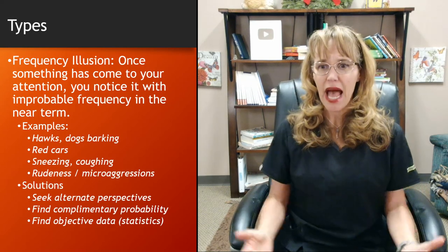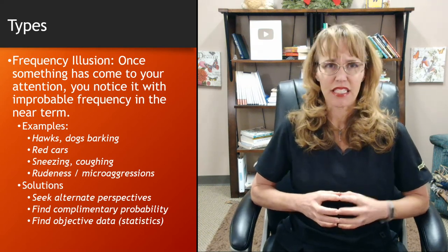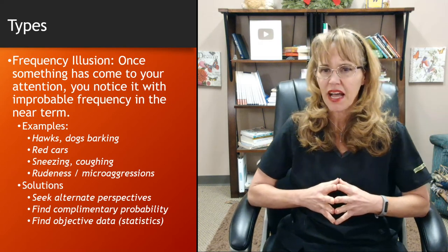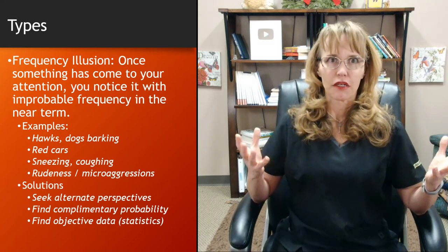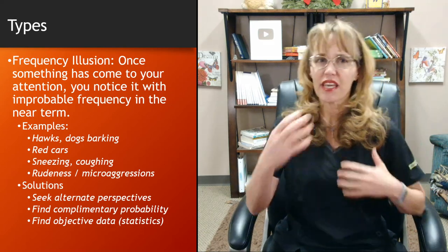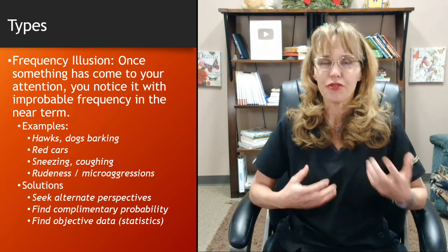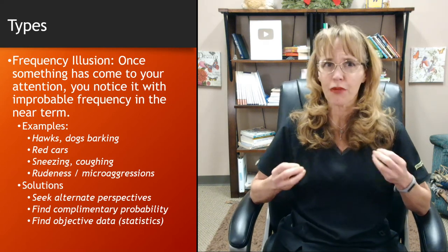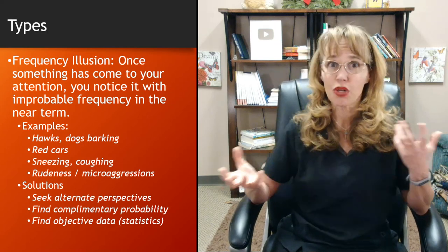Solutions: seek alternate perspectives. Is this factually happening more frequently? What does somebody else think — does somebody else share your perception that this is increasing? Find a complementary probability: if you're noticing red cars, start looking for yellow cars and see if you start thinking yellow cars are more prevalent on the road than you did before.